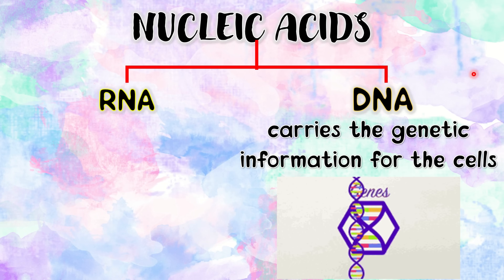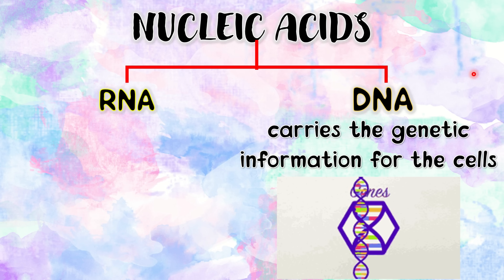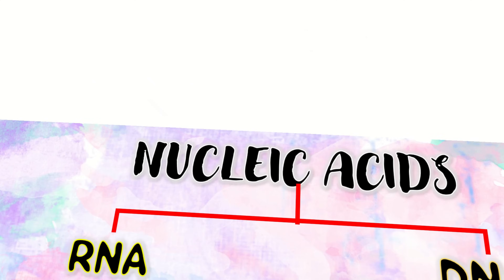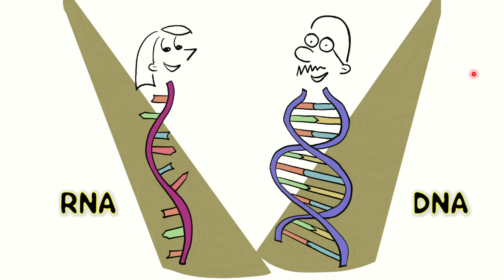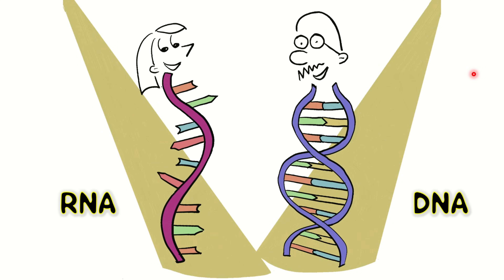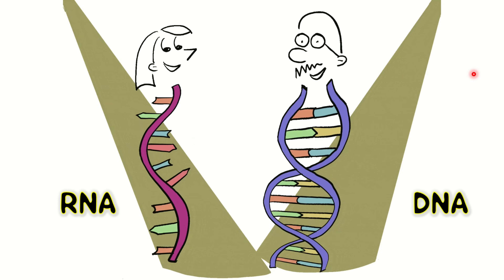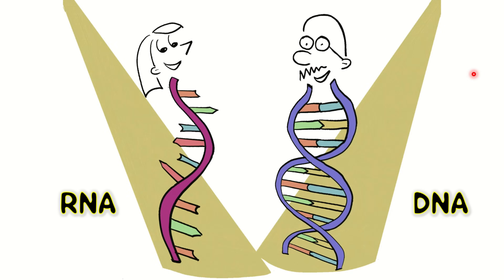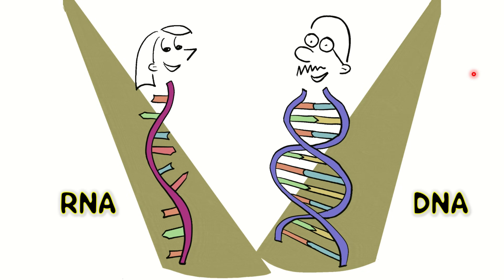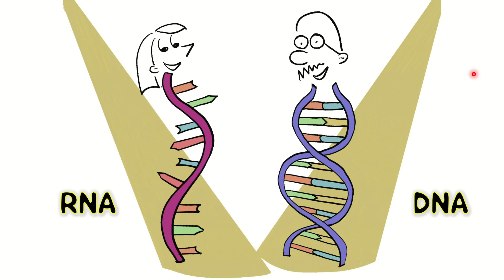Sections of a DNA molecule called genes contain the information to make a protein. DNA serves two main functions: molecules of DNA can produce other DNA molecules and RNA molecules, and RNA molecules are directly responsible for the synthesis of proteins. And that is all for the four types of organic compounds.